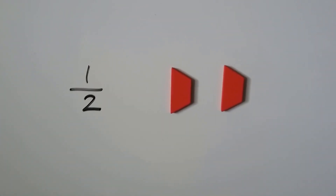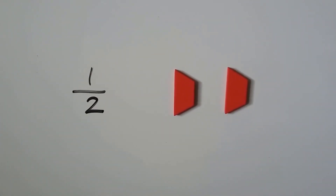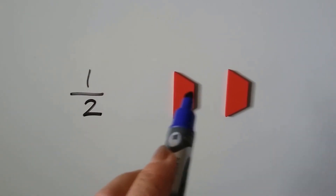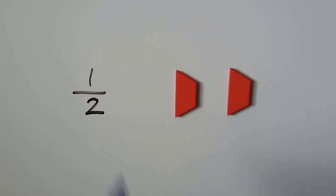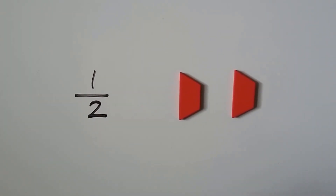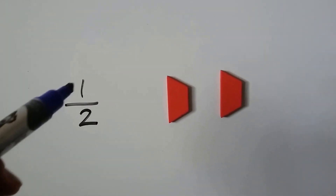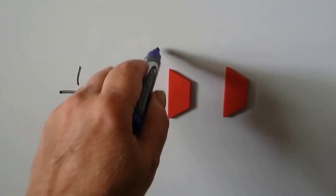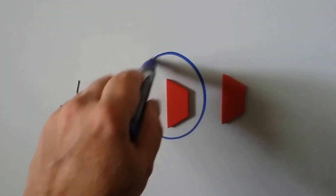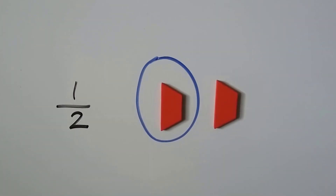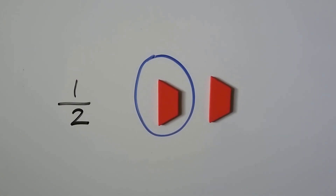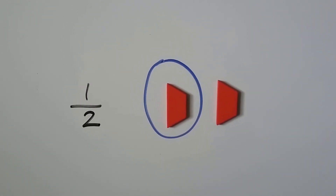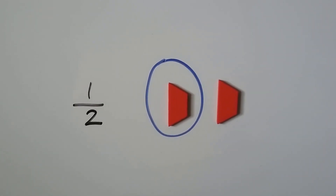We need half to be circled. There's two in the group — that's the bottom number. It says one needs to be circled. When we circle one of them, then half of these are circled — half of our trapezoids are circled.